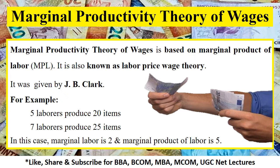Let's discuss this concept with an example. Suppose 5 laborers produce 20 items, and if we increase the labor force to 7, then 7 laborers will now produce 25 items. In this case the marginal labor is 2 and the marginal product of labor is 5. So with applying 2 more laborers there will be a production of 5 more items. This is the concept on which this theory of marginal productivity of wages works.